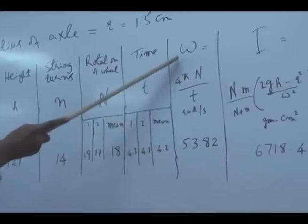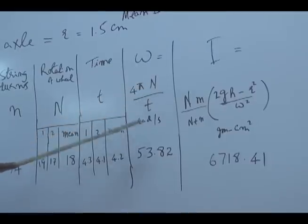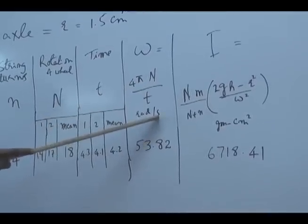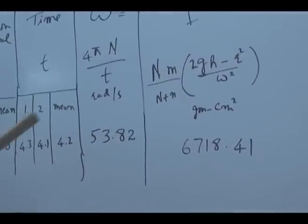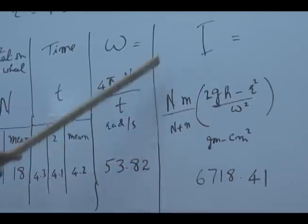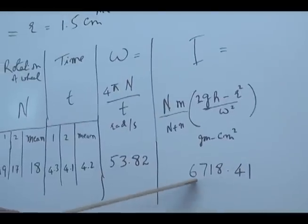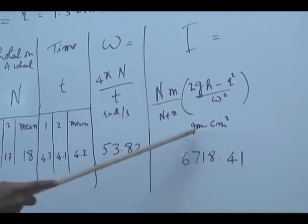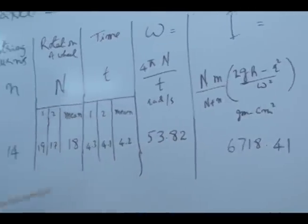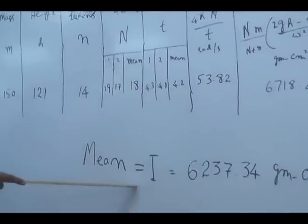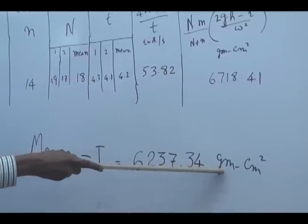Then we can put in the formula to find the value of omega which is equal to 4 pi N over t. Its units are radian per second, it comes out to be 53.582, then putting in this bigger formula to find the value of I. According to these specific values we get the value of 6718.41 gram centimeter square. So in this way we will take three readings, then find its mean value. Let's suppose that its mean value comes out to be 6237.34 gram centimeter square.